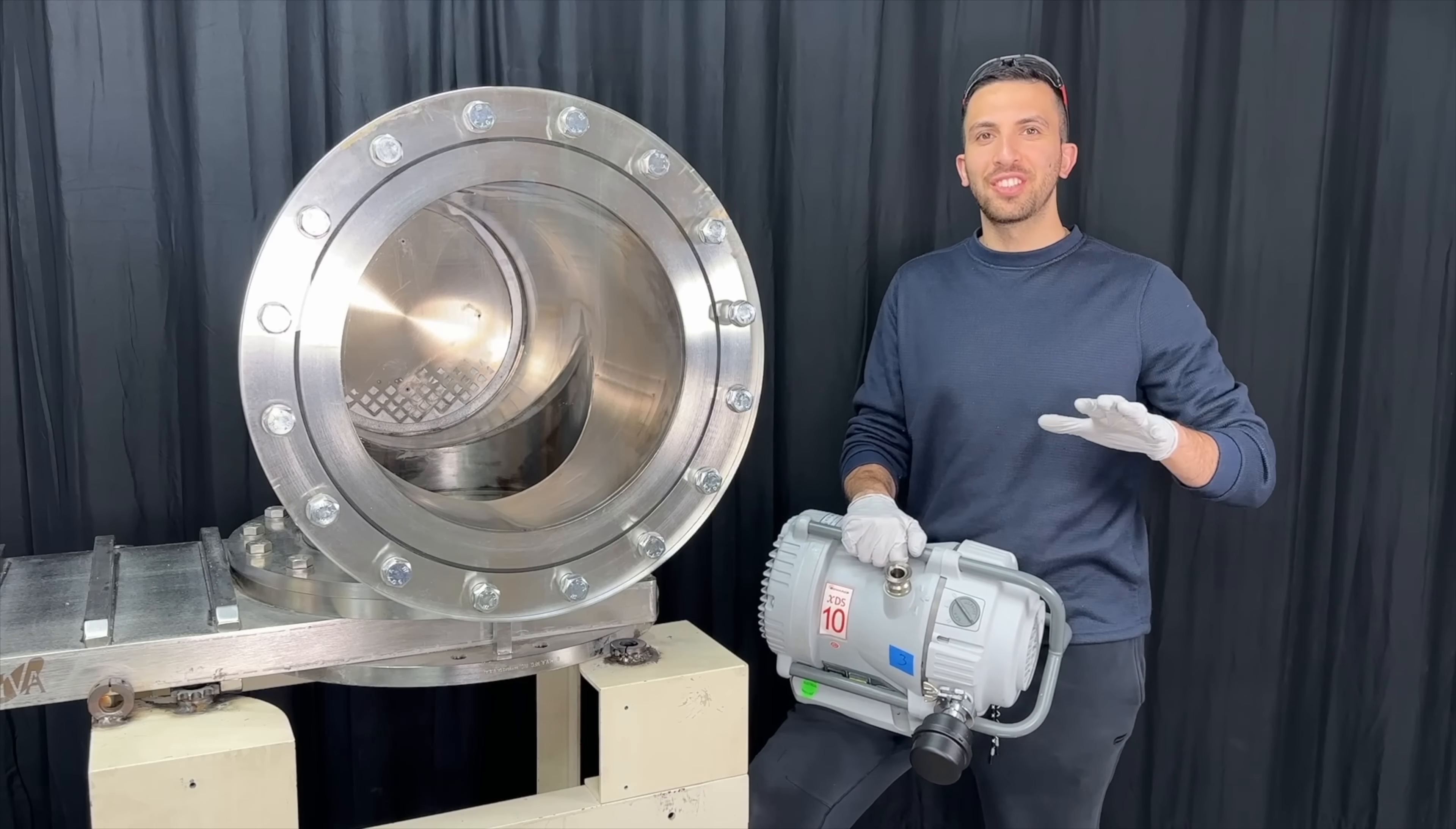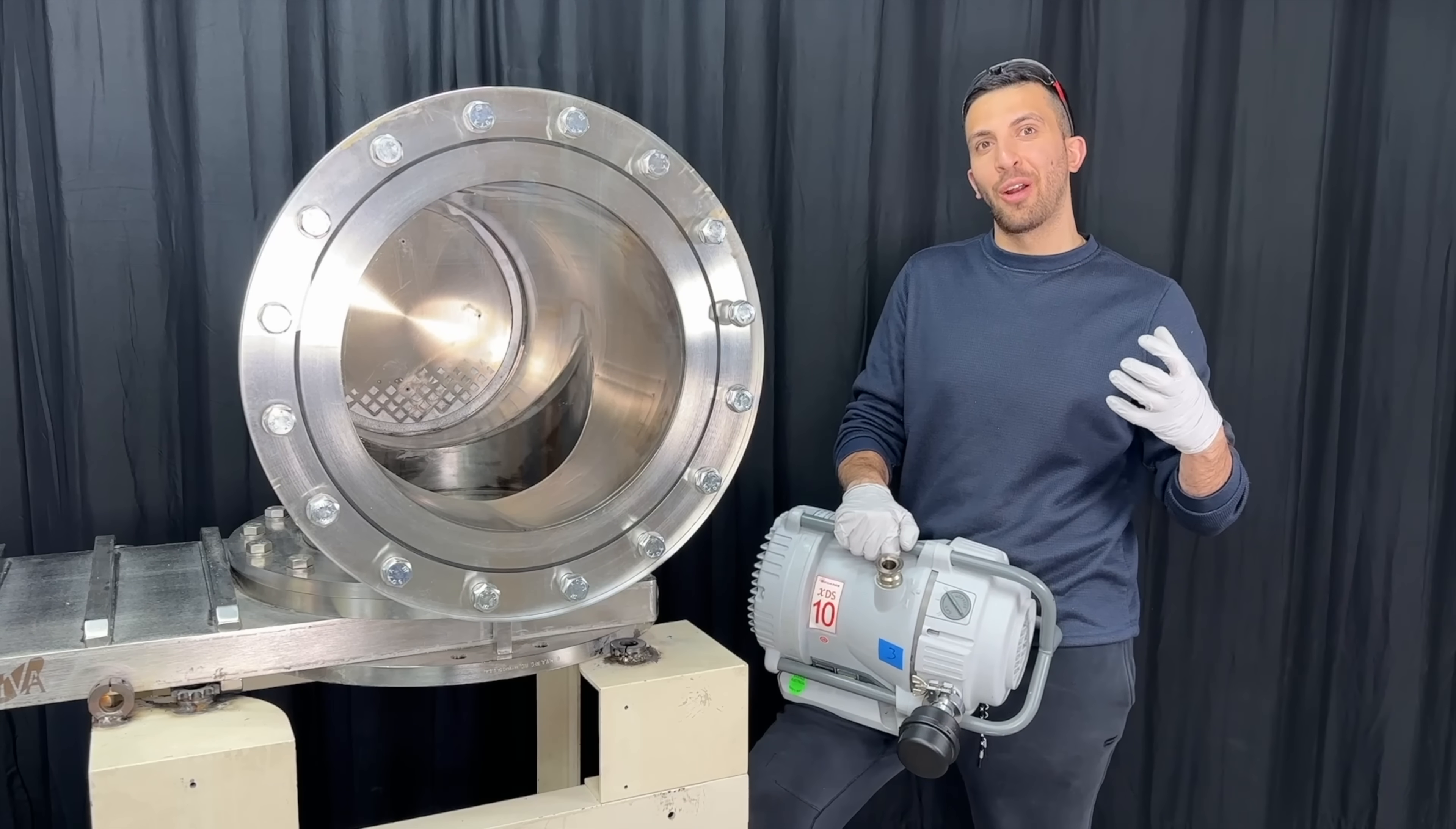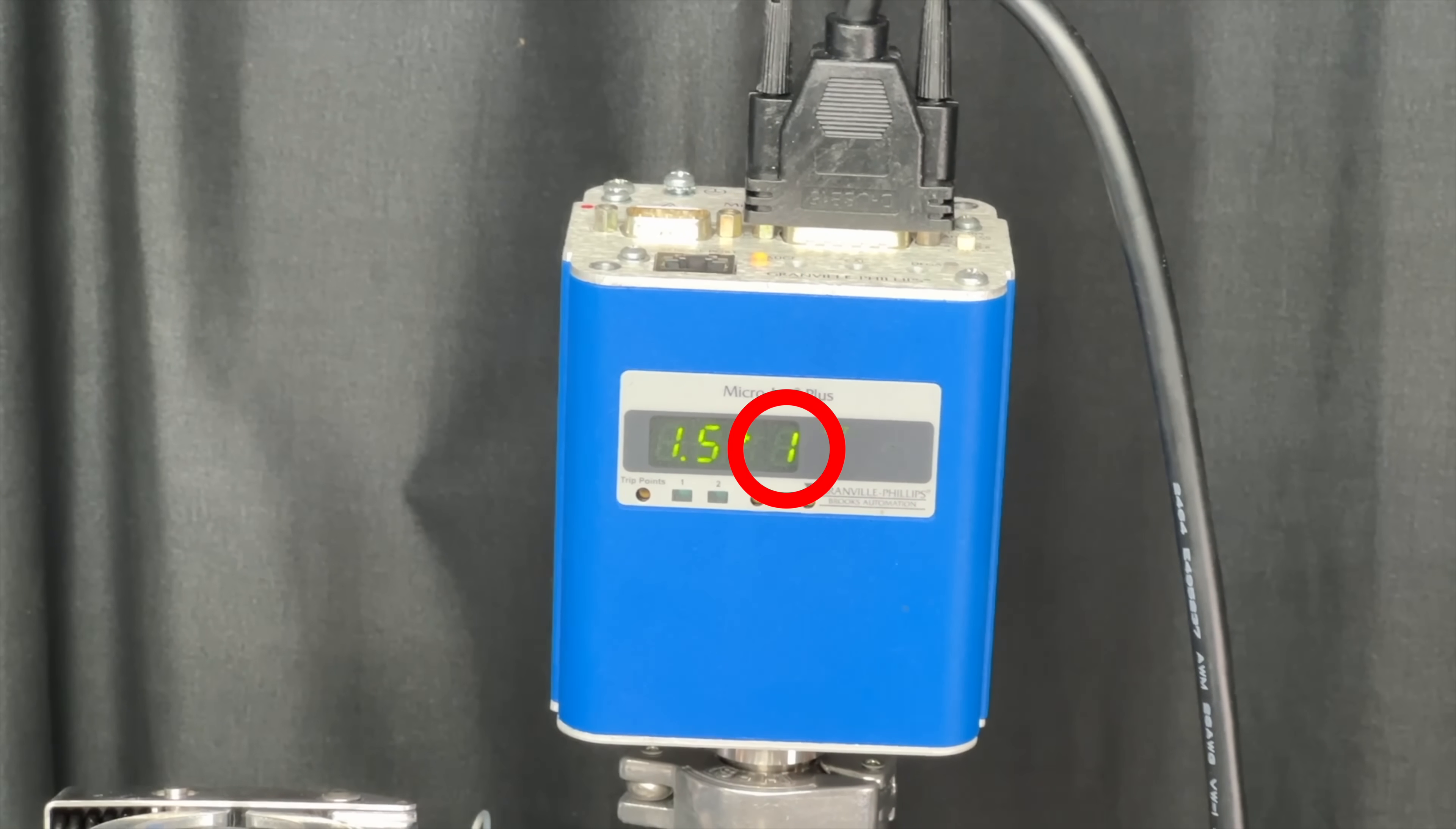So our vacuum chamber is all sealed. We now have our vacuum pump, which is what we're going to use to suck all the air out. And here we have a gauge, which is going to tell us exactly how high our vacuum is. The number you really care about is this one here.